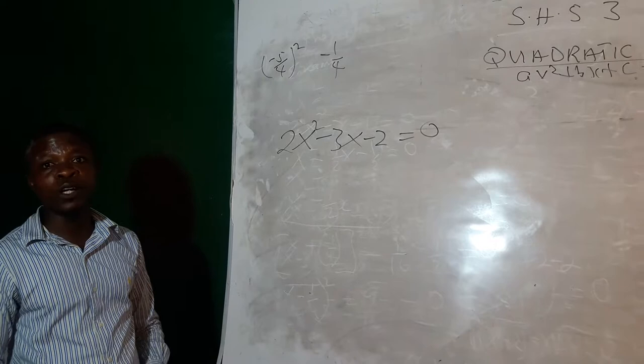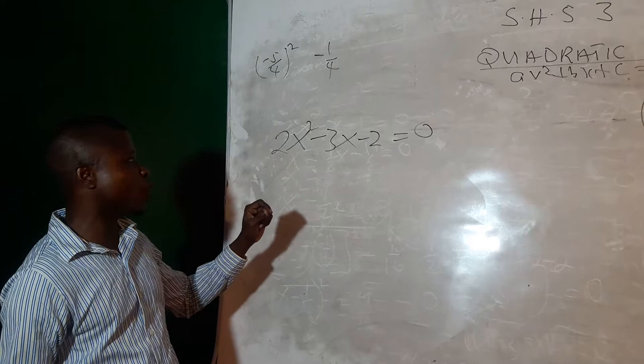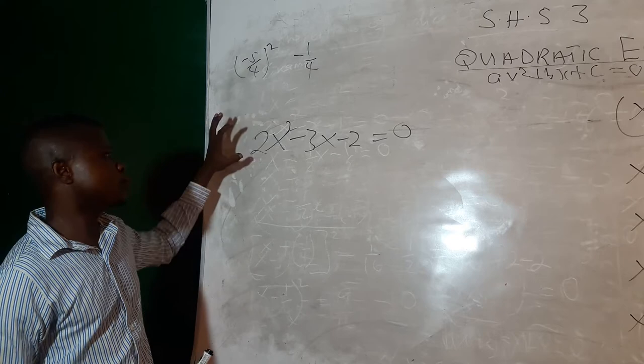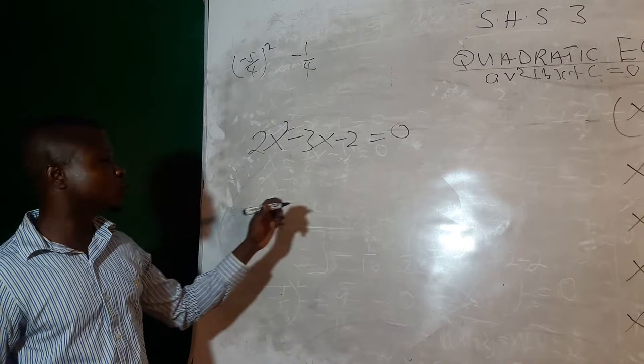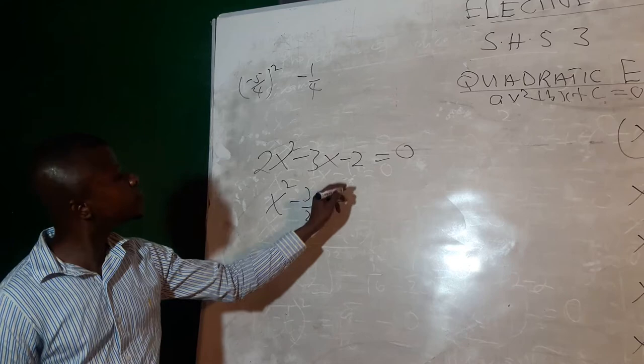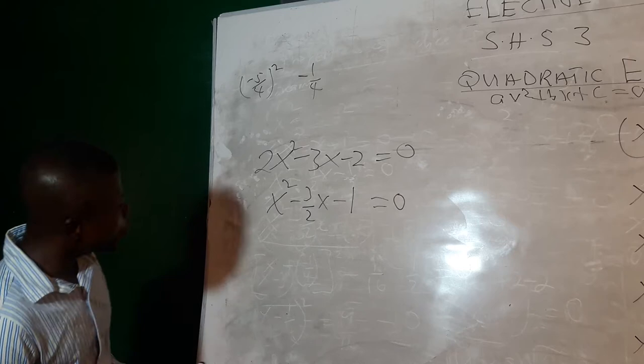We want to use the method of completing the squares. The first thing we have to do is make the coefficient of x squared equal to 1 before we check whether the expression is a perfect square or not. So let's divide through by 2. We get x squared minus 3 over 2 times x minus 1 is equal to 0.